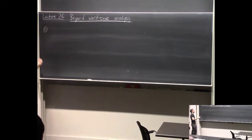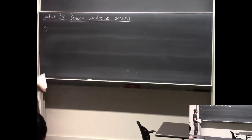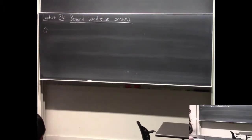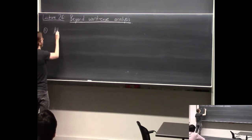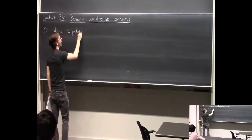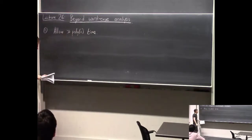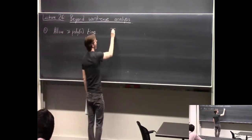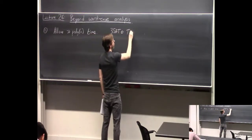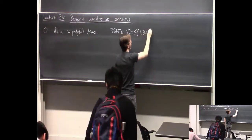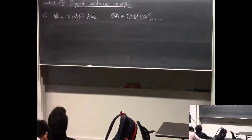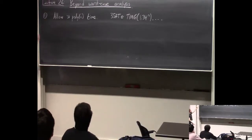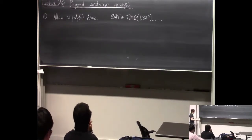There does not exist a polynomial time algorithm A that for every input always gets the right answer. For all of those possibilities, you can relax your ambitions. One thing you can do is try to solve 3SAT exactly on all instances, but allow more than polynomial time. You can do 3SAT in better than 2^n time — something like 1.34^n. Maybe if you can solve SAT in time n^{log log n}, you might be pretty happy, given that it's the best you can do.